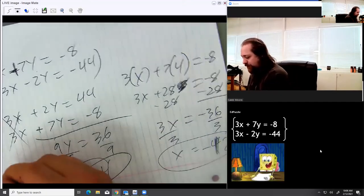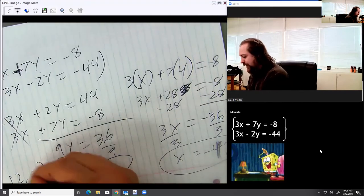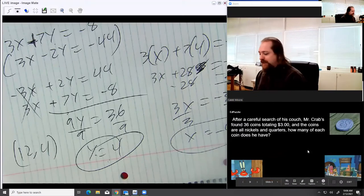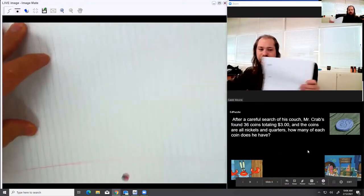All right. So those are the answers. Negative 12 comma 4 because x then y. So looking at our next example, our final example, in fact, is a story problem.